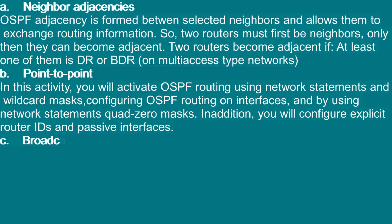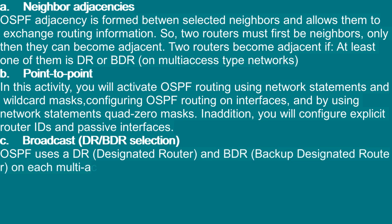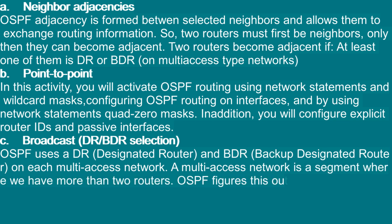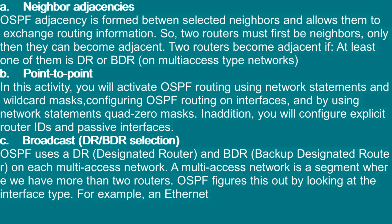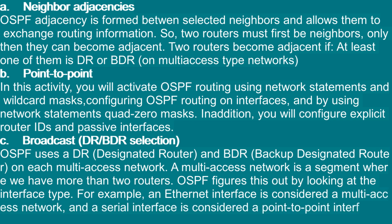C — Broadcast, DR/BDR selection: OSPF uses a DR (designated router) and BDR (backup designated router) on each multi-access network. A multi-access network is a segment where we have more than two routers. OSPF determines this by looking at the interface type. For example, an Ethernet interface is considered a multi-access network, and a serial interface is considered a point-to-point interface.